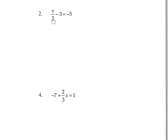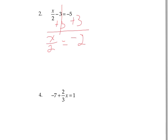On number 2, x divided by 2 minus 3 equals negative 5. We get rid of minus 3 first by adding plus 3 on both sides. The minus 3 and plus 3 cancel, giving x over 2 equals negative 5 plus 3, which is negative 2. This is division — the opposite of divide is multiply. To undo divide by 2, we multiply by 2 on both sides. The 2s cancel, giving x equals negative 2 times 2, which is negative 4. That's your solution.